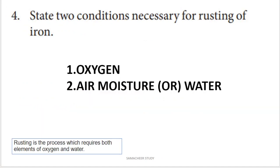Next question: State two conditions necessary for rusting of iron. We know this from practical life. It can be water or air moisture, and oxygen. In these conditions, iron rusts.